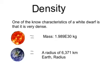One of the many known characteristics of a white dwarf is that it is very dense. A white dwarf has the same mass as the Sun, yet is the same size as the Earth. We can fit one million Earths inside the Sun. This shows us that the white dwarf is very dense.